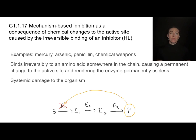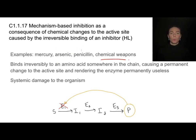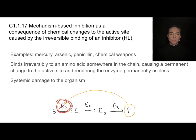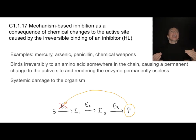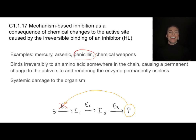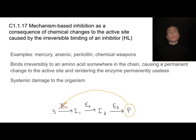However, some inhibitors are not reversible. Certain heavy metals like mercury or arsenic, penicillin, and certain chemical weapons bind permanently to an amino acid somewhere on one of the enzymes in the chain, making the non-competitive inhibition permanent. This permanently shuts down that enzyme chain and can cause really detrimental systemic damage to the organism. That's exactly how penicillin kills bacteria, and why mercury, arsenic, and chemical weapons are so devastating.